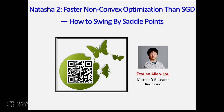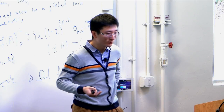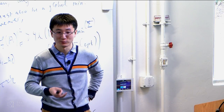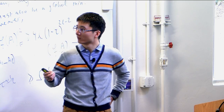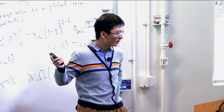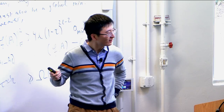This talk is about faster non-convex stochastic optimization than SGD, with a subtitle: how to swing by a set of points. I want to thank the organizers for inviting me to give this talk. I really learned a lot, including something towards the end of the talk that reflects what I learned the day before yesterday.